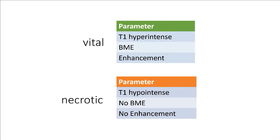These are the classical teaching MR parameters to assess the vitality of the scaphoid bone. A vital fragment is supposedly T1 hyperintense with bone marrow edema and enhancement. A necrotic fragment, on the other hand, is supposed to be T1 hypointense without edema or enhancement.